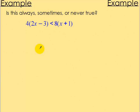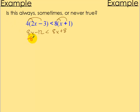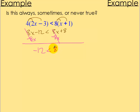Next example. Distribute on both sides first: 8x minus 12 is less than 8x plus 8. Subtract 8x on both sides — they cancel. I'm left with negative 12 is less than positive 8. Is that true? Yes, it is true. So it's going to be always.